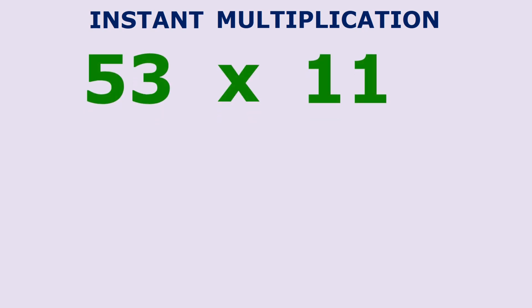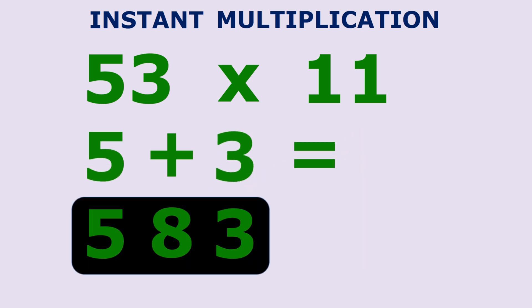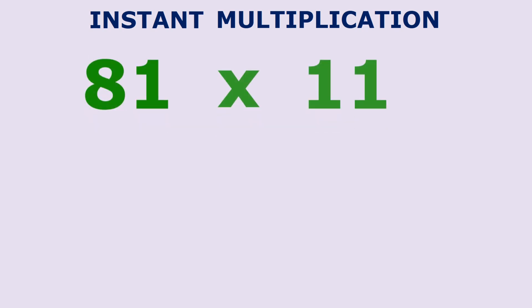Now let's try 53 x 11. Since 5 plus 3 is equal to 8, your answer is simply 583. One more. Without looking at the answer or writing anything down, what is 81 x 11? Did you get 891? Congratulations!